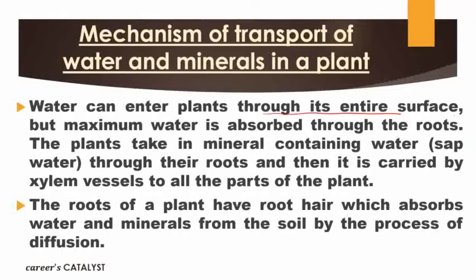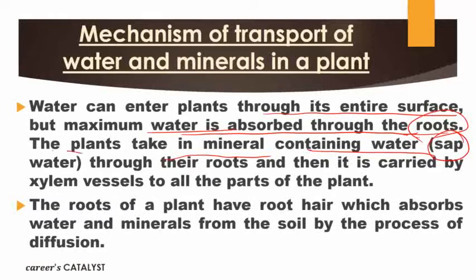Water can enter a plant through its entire surface, because tiny pores are present in every part of the plant. These tiny pores, like stomata, help absorb water from the surroundings. But the maximum absorption of water is done by roots only. Roots absorb water from the soil along with minerals. This water along with minerals is defined as sap water. Sap water is then carried by xylem vessels to all parts of the plant body.